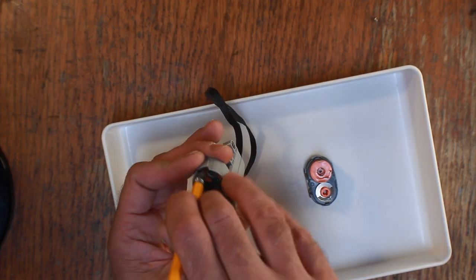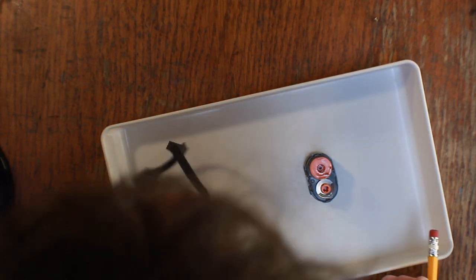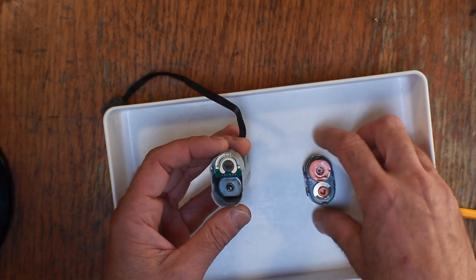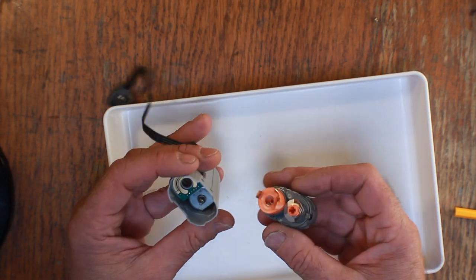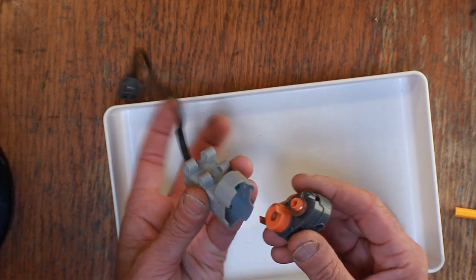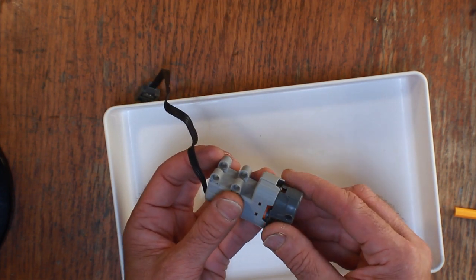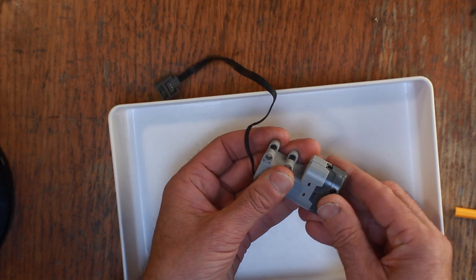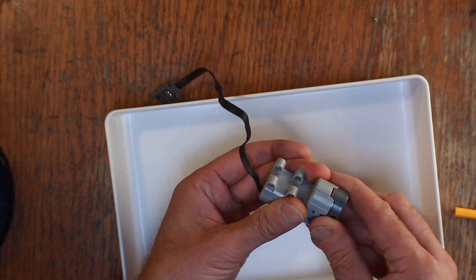And then once you've got that done, you can just give it a little blow. You can get any rubber dust out of there. And then we're going to reassemble this and carefully try to get this back together again, keeping the whole thing together. And it should go back together nice and smooth.